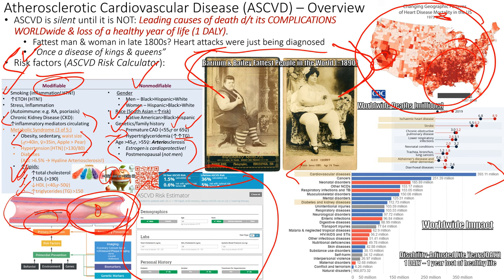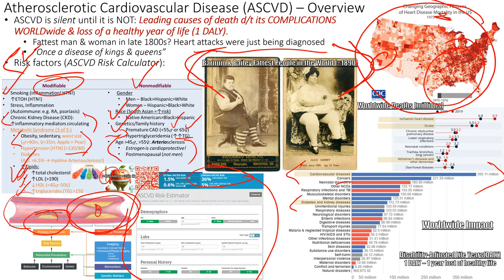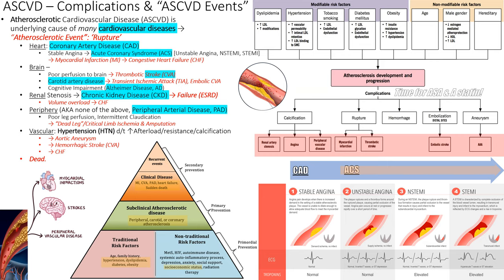ASCVD is the number one cause of death worldwide — almost double the next cause, cancer. Diabetes is also in the top ten and increases ASCVD risk. ASCVD complications include straight-up death, or head-to-toe events: strokes in the head, coronary artery disease in the heart, kidney failure, and peripheral arterial disease.